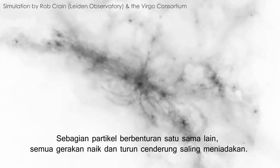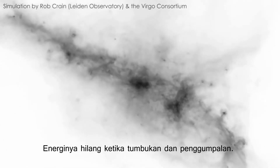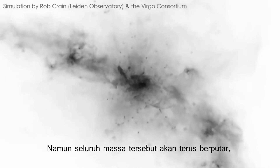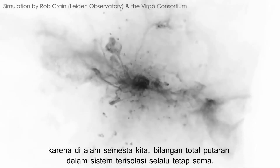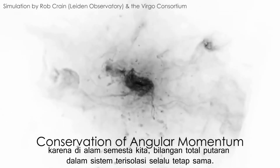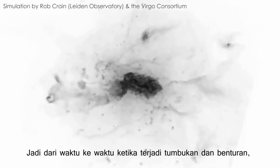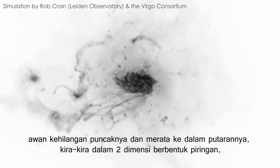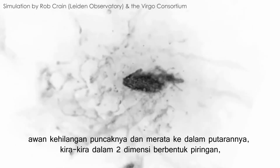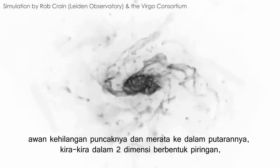As the particles bump into each other, all of the up and down motion tends to cancel out, its energy lost in crashing and clumping. Yet the whole mass must continue spinning, inexorably, because in our universe the total amount of spinning in any isolated system always stays the same. So over time, through collisions and crashes, the cloud loses its loft and flattens into a spinning, roughly two-dimensional disk shape, like a solar system or spiral galaxy.